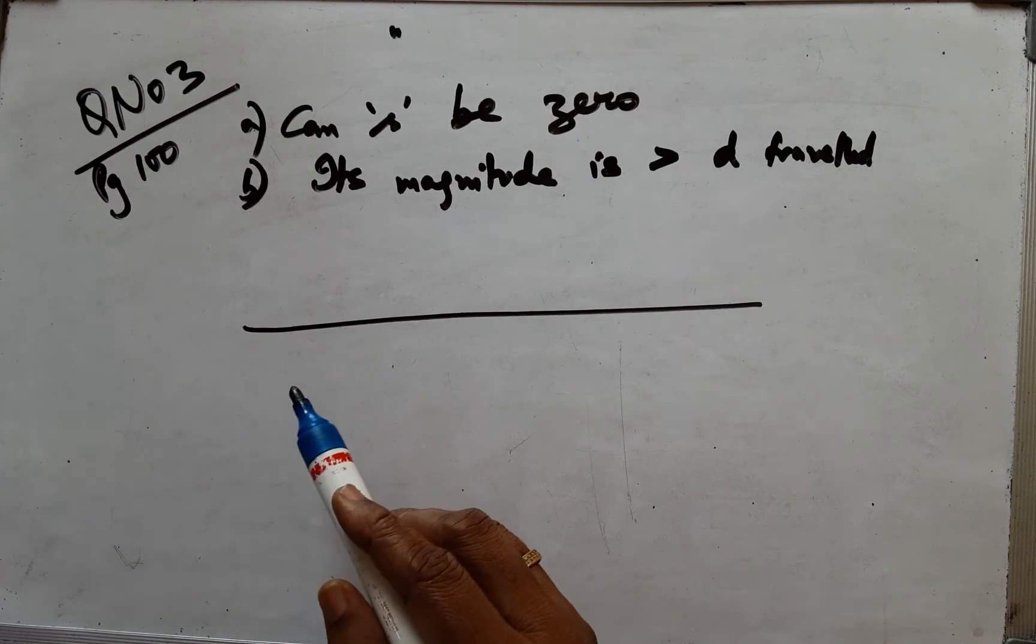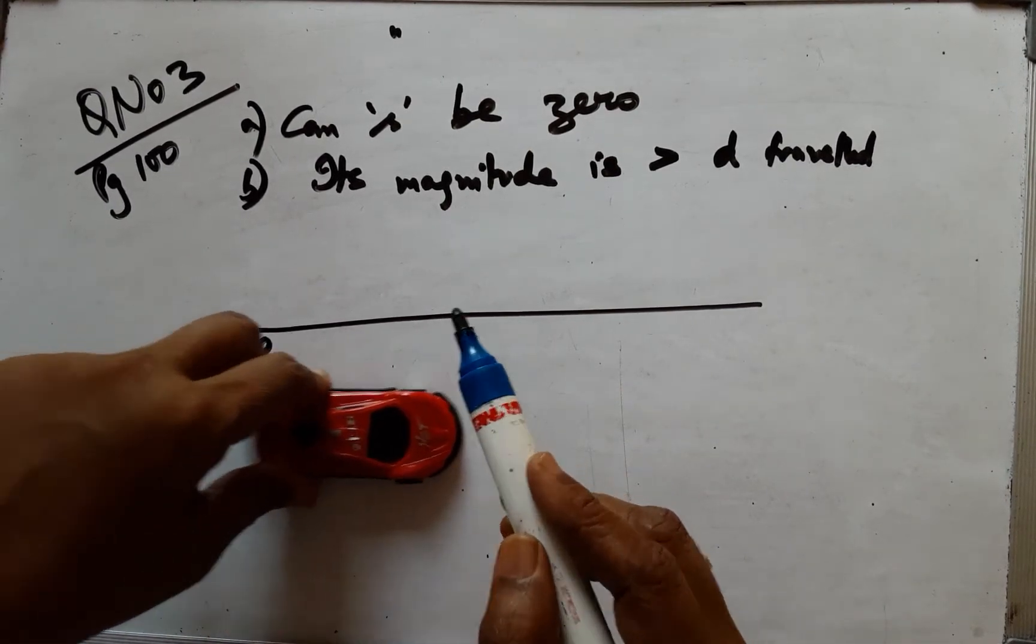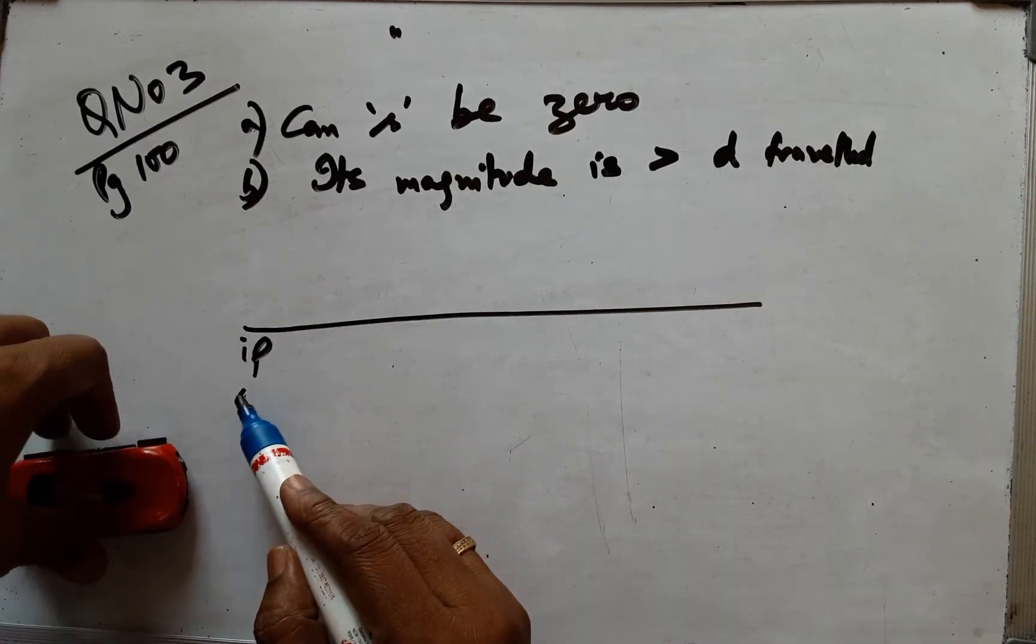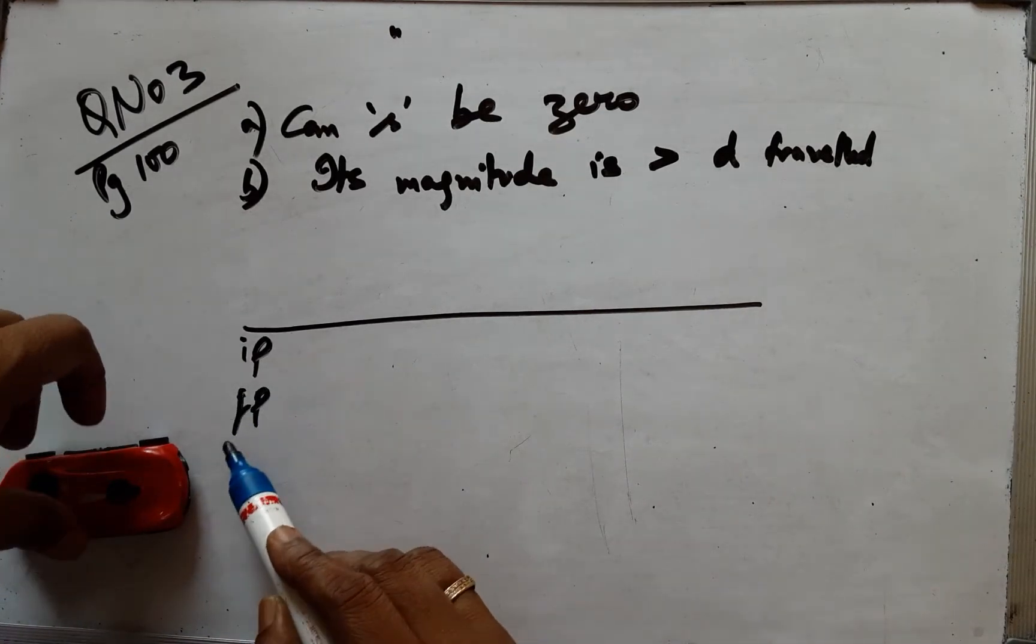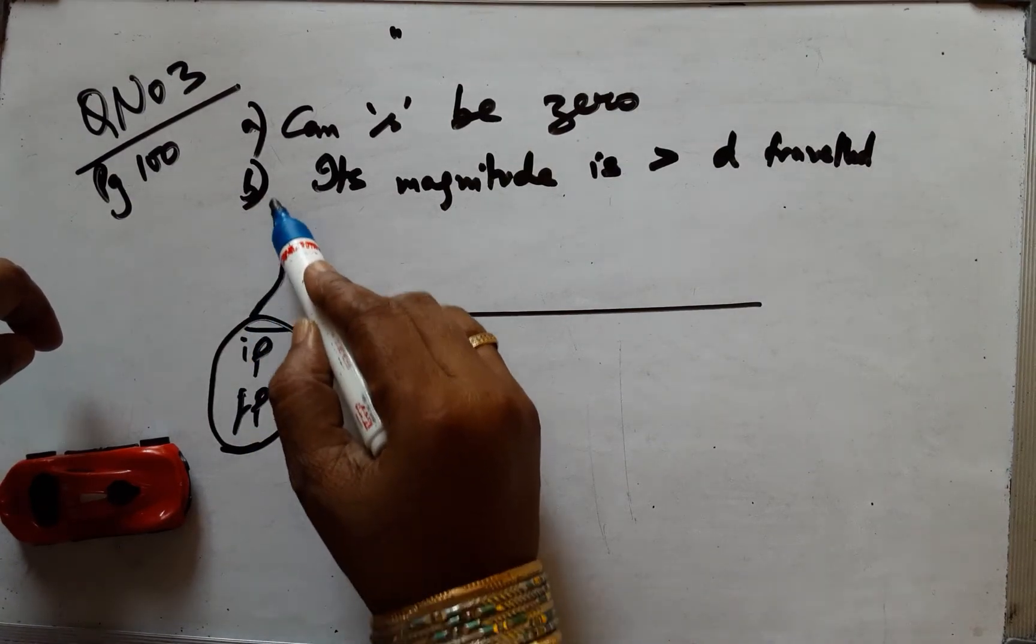If an object starts from the initial position and comes back to the starting point, this will be the final position of the object. If initial position and final position are one and the same,